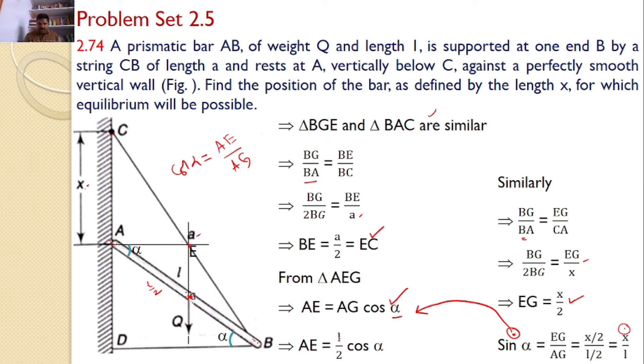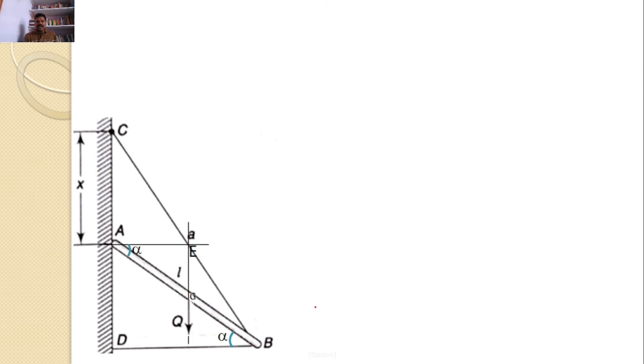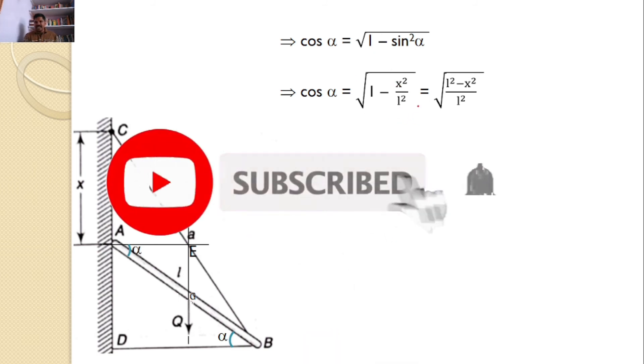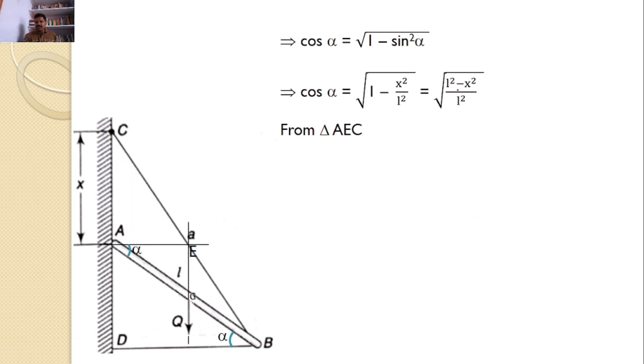So it is AE is equal to L by 2 into cos alpha. So cos alpha is equal to root of 1 minus sin square alpha. Sin alpha, I got the value of x by L from the previous slide. And if you simplify, I will get cos alpha root of L square minus x square by L square.